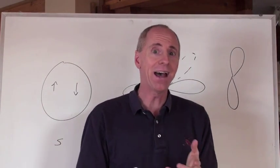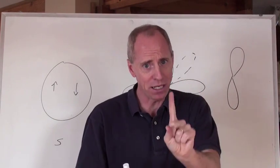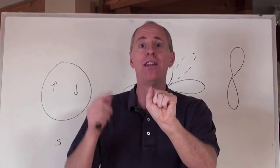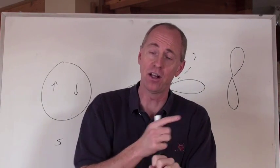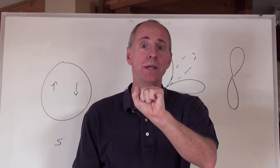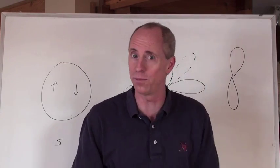Because remember, when you have a p orbital, you have the negative one, zero, and one nl's to be able to fill, and that's going to be the 2px, the 2py, and the 2pz orbitals.